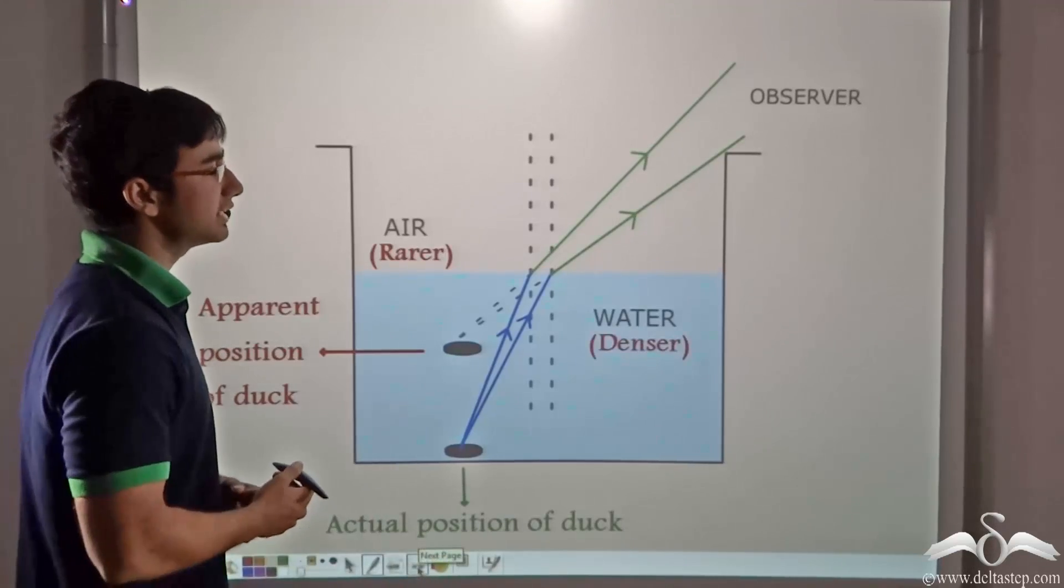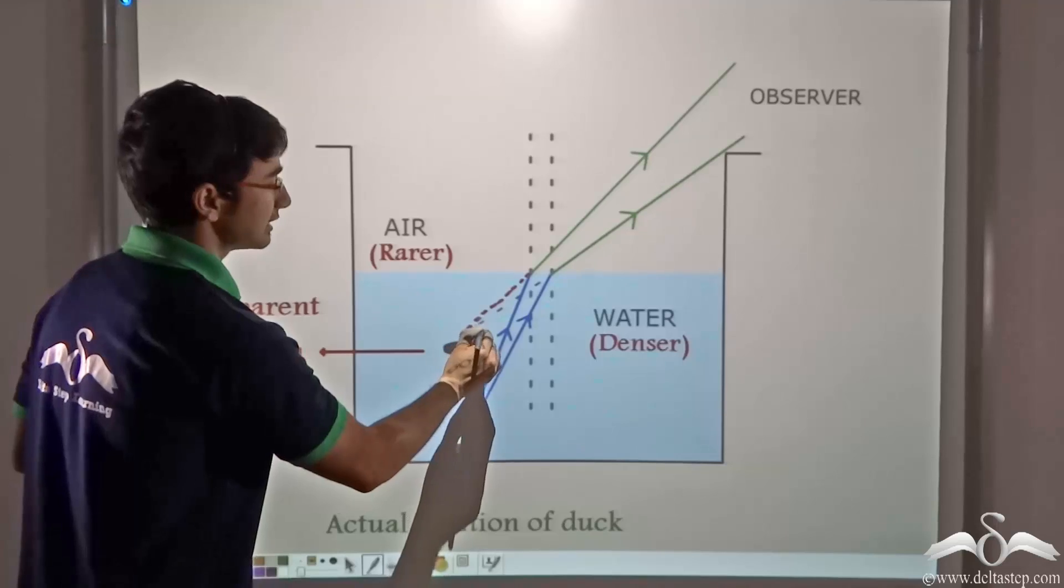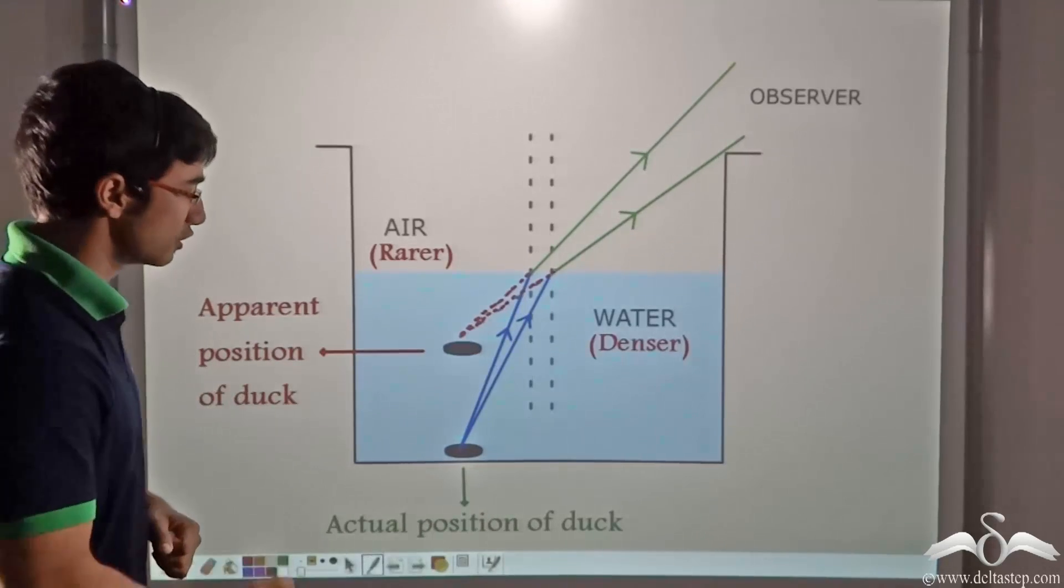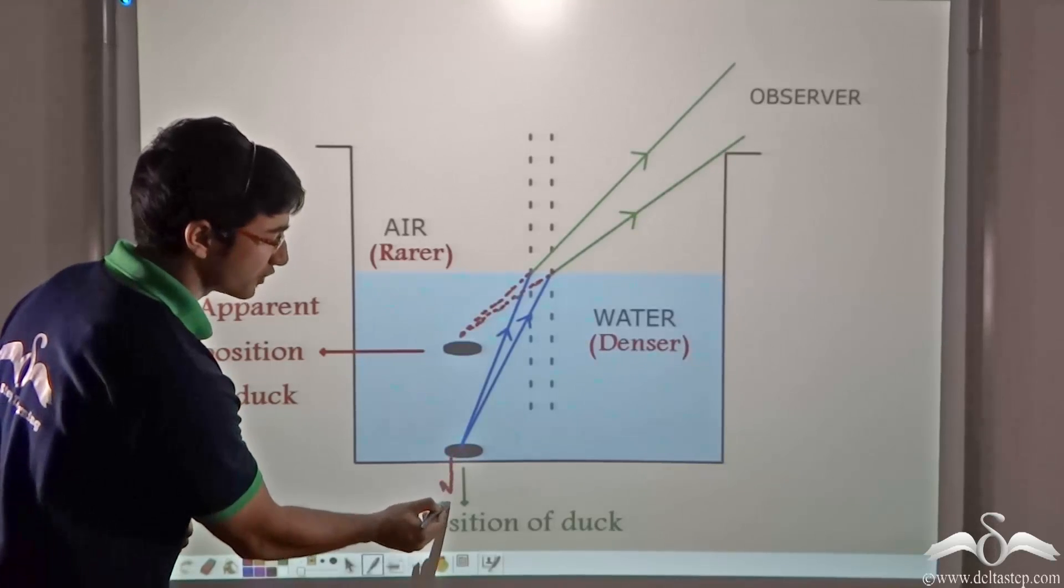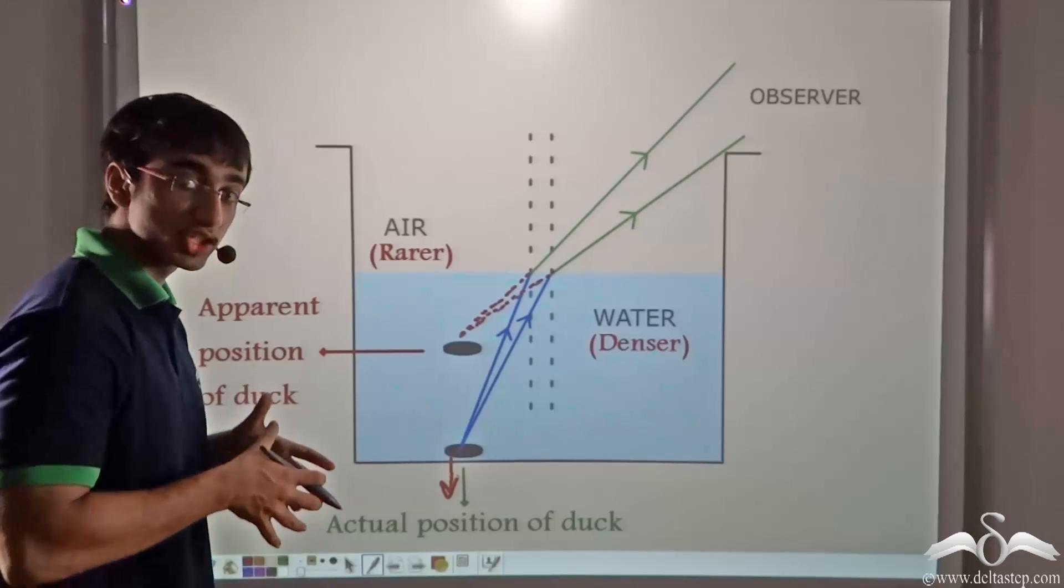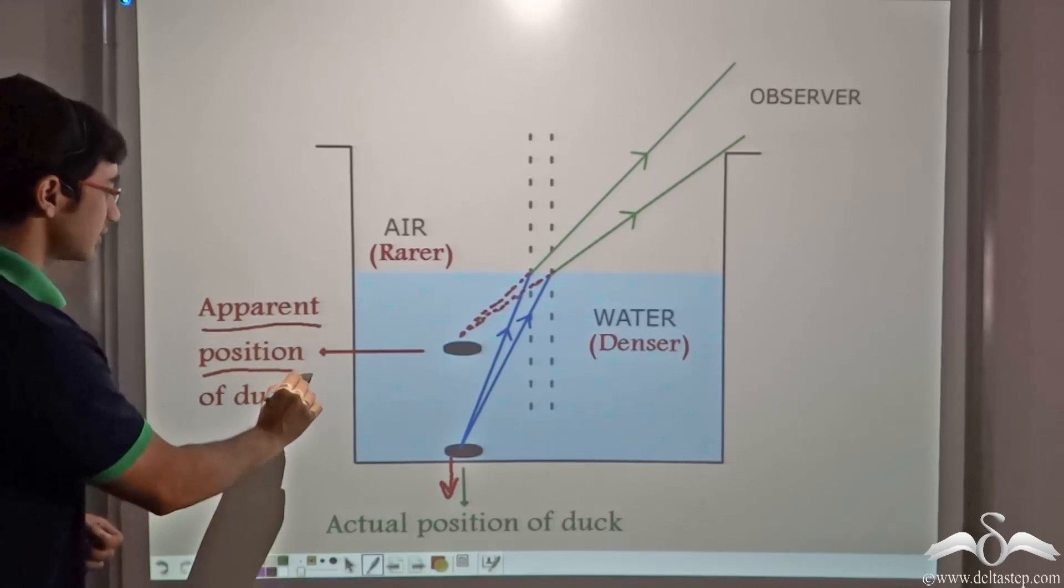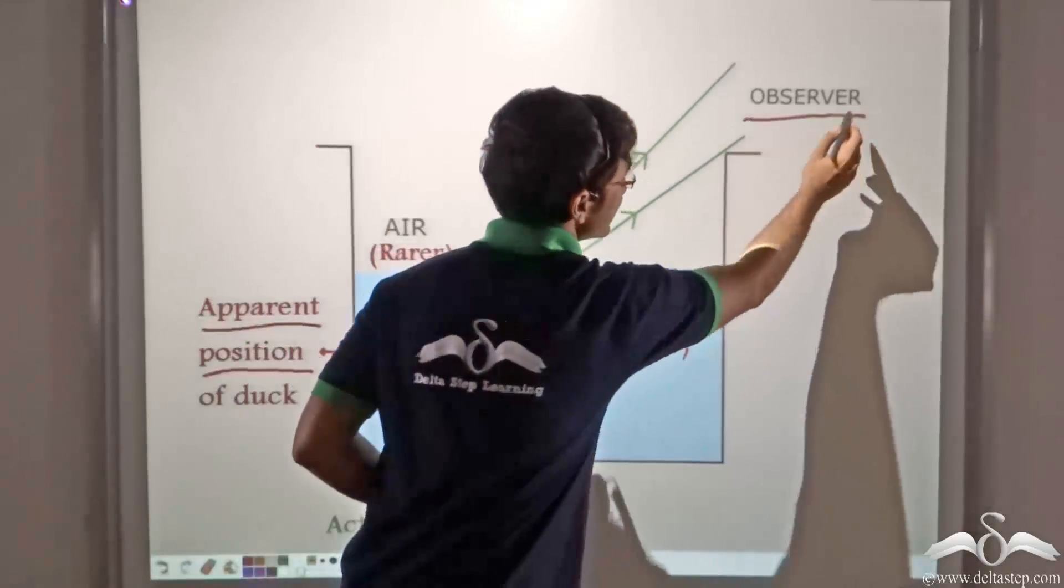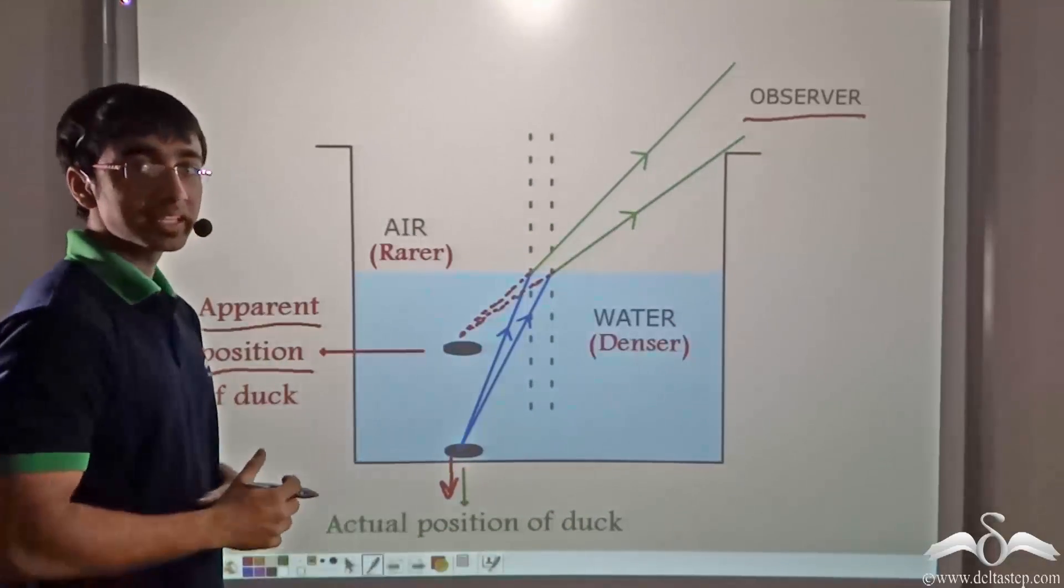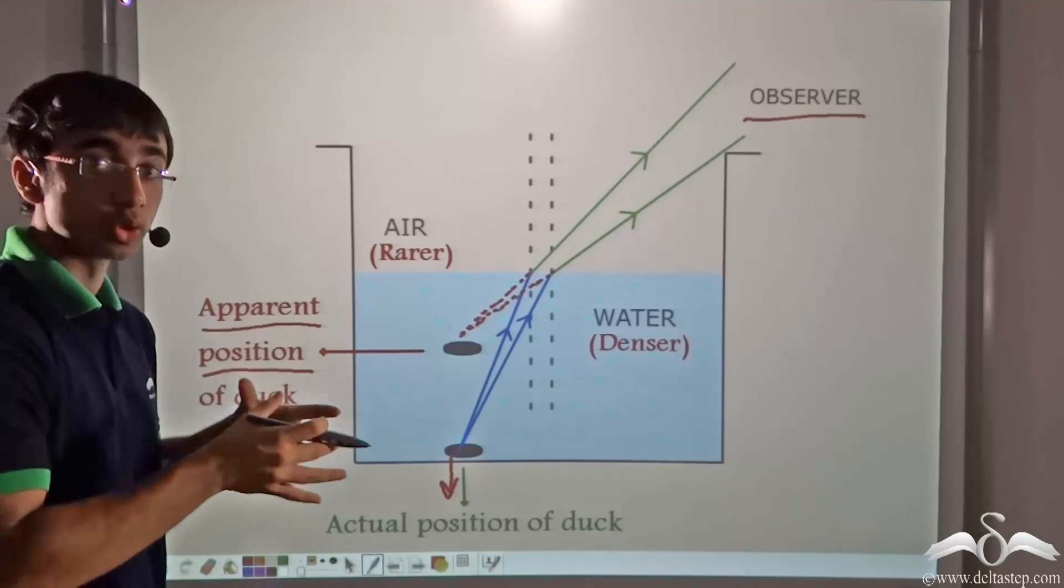If we extrapolate the refracted light rays, we will find that they are meeting at a position inside water that is different from the actual position of the duck. The actual position of the duck is where the duck is actually inside the water and the apparent position of the duck is where the observer thinks the duck is. So it is due to this that the observer who is seeing it from air thinks that the duck's bottom is broken.